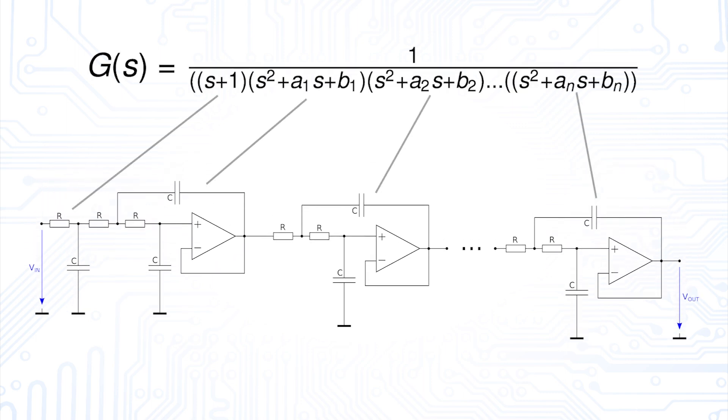The associated transfer function can be factorized according to the following principle. But enough about the transfer function. Let's discuss the advantages and disadvantages that such a Sallen-Key filter brings with it.